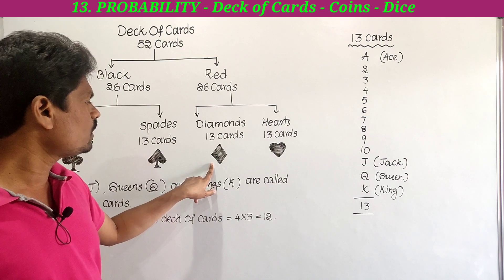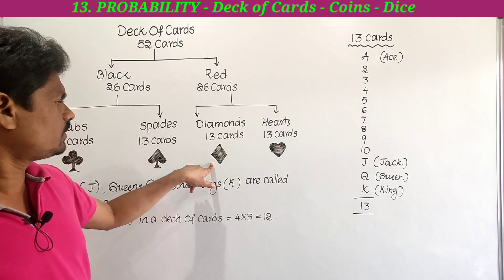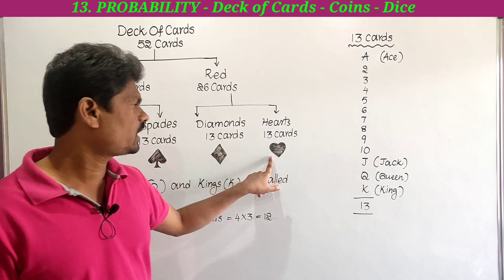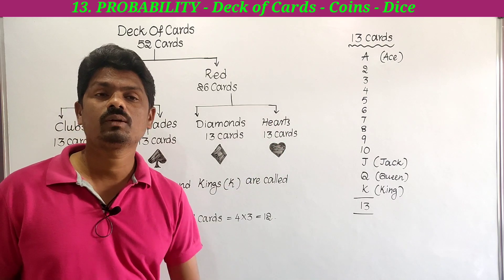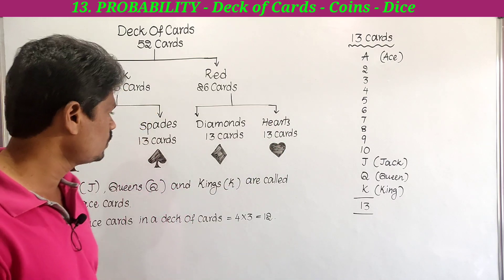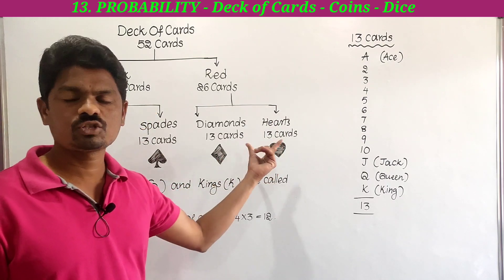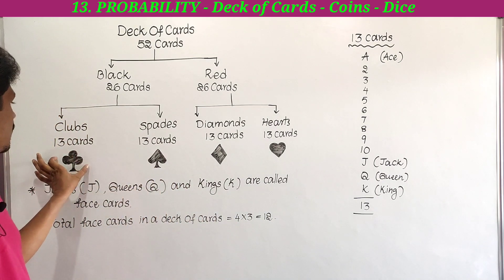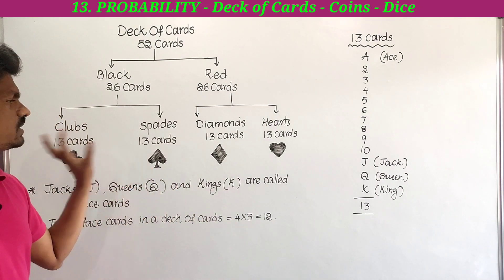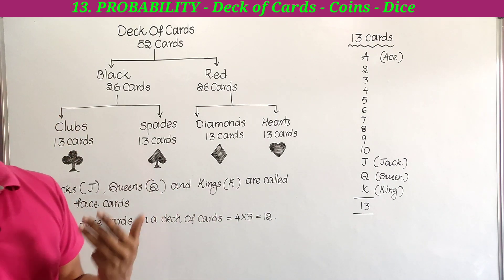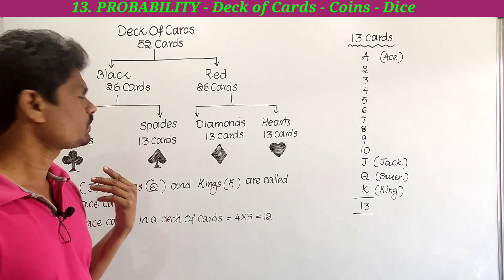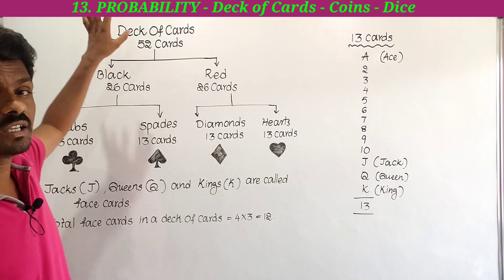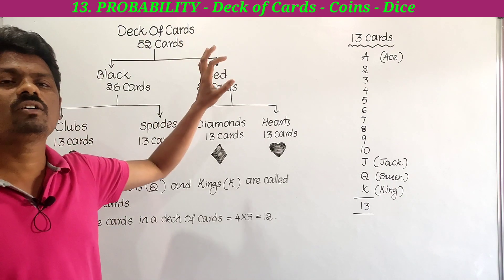Diamonds and hearts are red color cards, while clubs and spades are black color cards. So now the total deck of cards — a set of playing cards — has 4 suits.